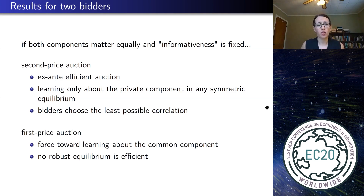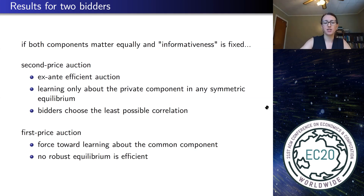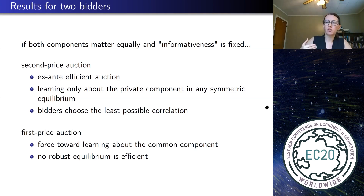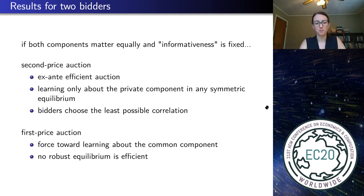I won't have time today to talk about first price auctions, but in the paper you can see how the effect there goes in the other direction — there's a force pushing towards learning about the common component, pushing towards more correlation. And in the paper I show that no robust equilibrium is going to be efficient.